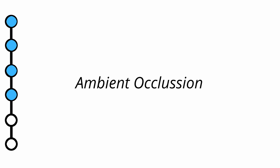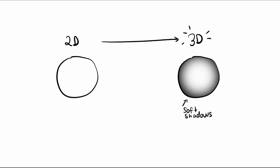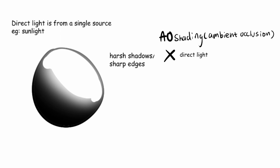The next step is ambient occlusion, which is a type of shading. It is a shading technique to make 2D objects look much more 3D. The shadows created are soft shadows. Understand that direct light is like from a single source — for example, sunlight. Direct light creates harsh shadows or sharp edges. For the ambient occlusion shading, the image has no direct light, so no hard shadows. Everything must be shaded in a soft shadow. The only light source should be your eyes or your gaze.